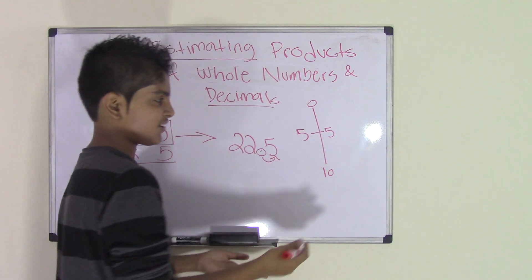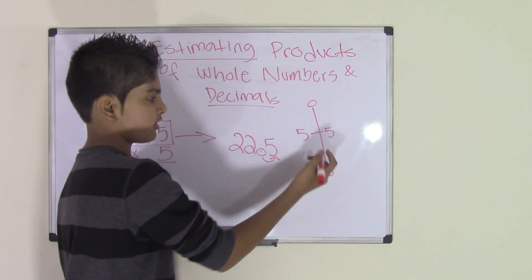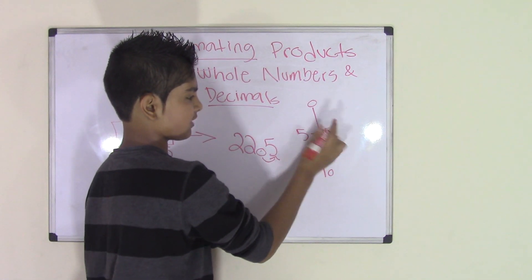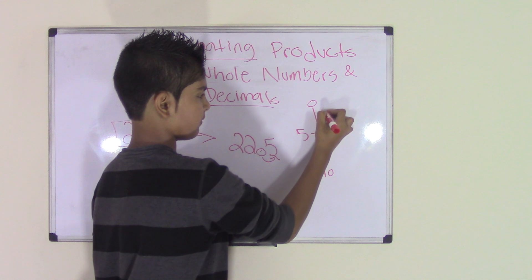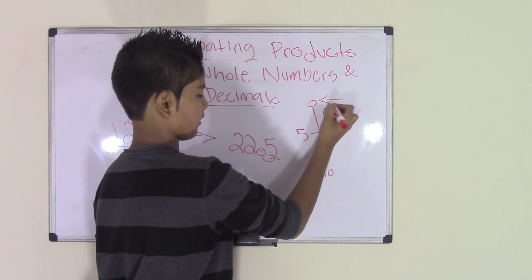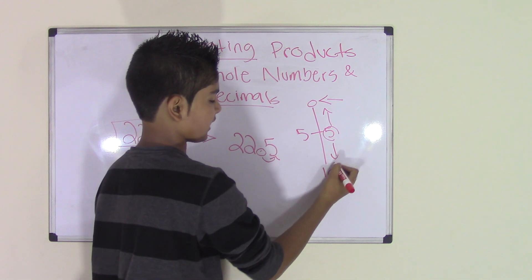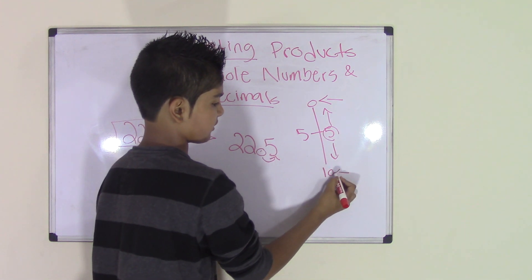Well, if it's in the middle, what do you do? Do you round it up or do you round it down? The thing is that if the number is less than 5, then we round it up, and our estimation will be to 0. And if it's greater than 5, then it will be rounded to 10.